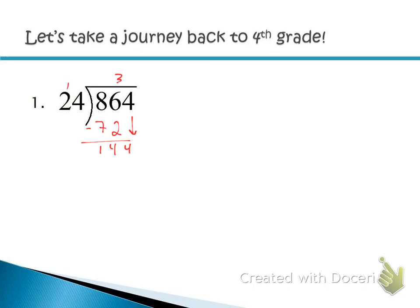2 goes into 14 seven times, so try 7. Multiply down: 7 times 4 is 28, carry 2; 7 times 2 is 14 — that's too much. Back it down to 6. 6 times 4 is 24, carry 2; 6 times 2 is 12, plus 2 is 14. Subtract and get 0 — no remainder. That means 24 goes into 864 exactly 36 times. With a remainder of 0, both 24 and 36 are factors of 864. The divisor and quotient are both factors — but only when the remainder is 0.